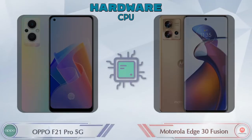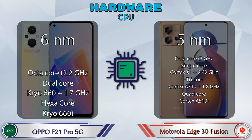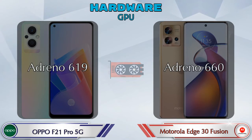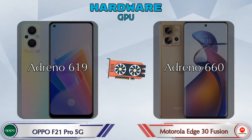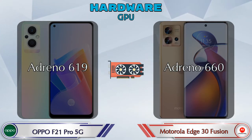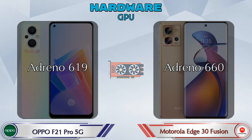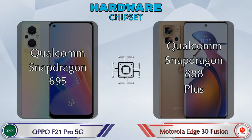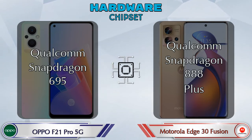First, let's see the details about the CPU. Talking about the GPU, the F21 Pro 5G has Adreno 619 and the Edge 30 Fusion 5G has Adreno 660. Talking about the chipset, the F21 Pro 5G has Qualcomm Snapdragon 695 and the 30 Fusion 5G has Qualcomm Snapdragon 888 Plus.